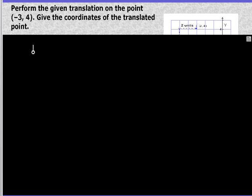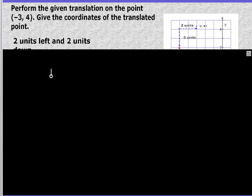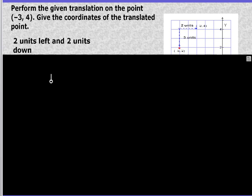Perform the given translation on the point (-3, 4). Give the coordinates of the translated point. Two units left and two units down. So this is a horizontal change and this is a vertical change. A horizontal change they indicate with the h, a vertical with a k. So left means we're going to have a negative h. Down means we're going to have a negative k.